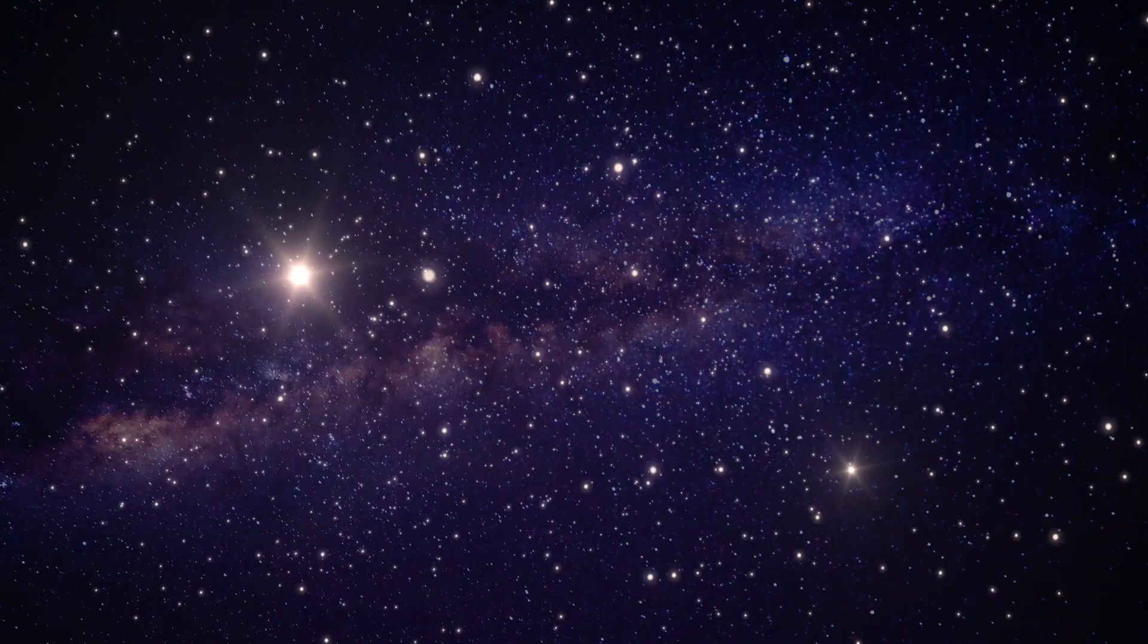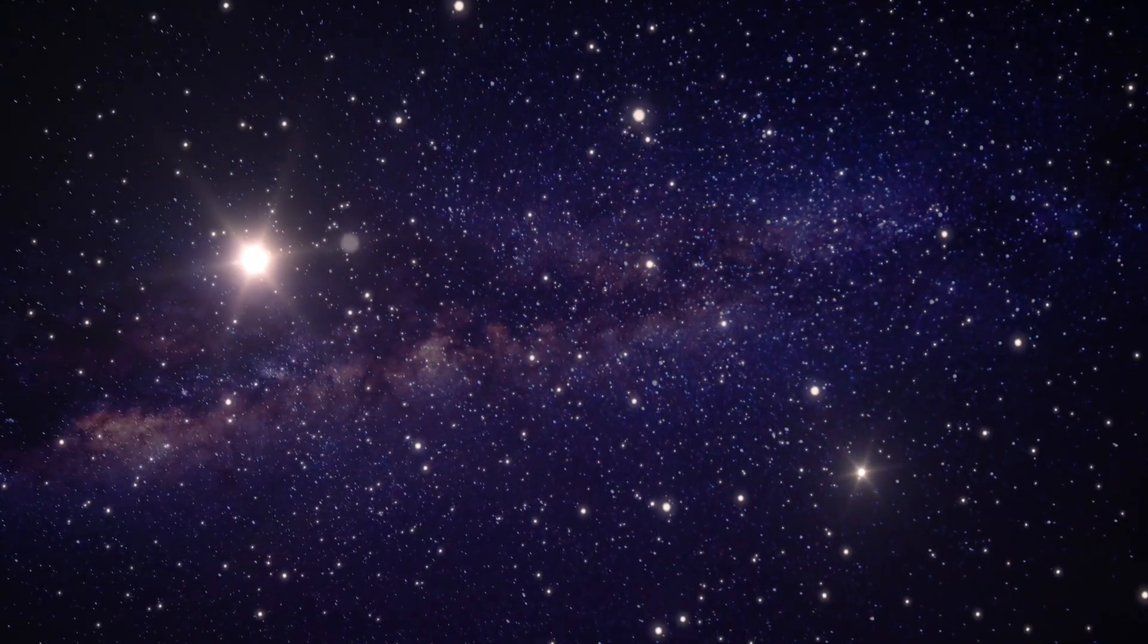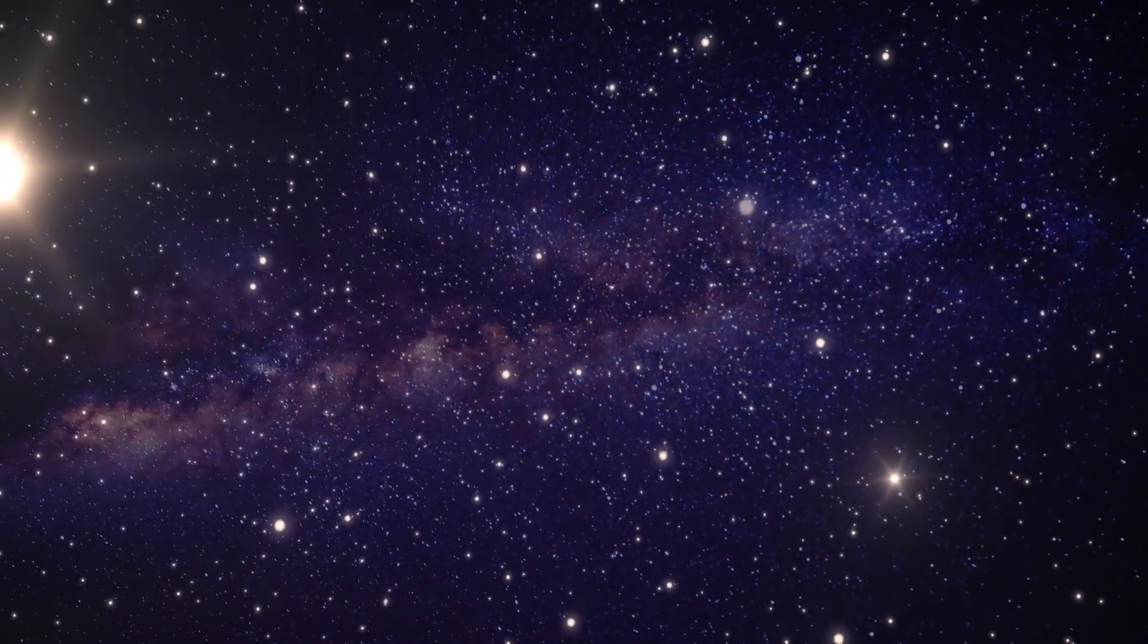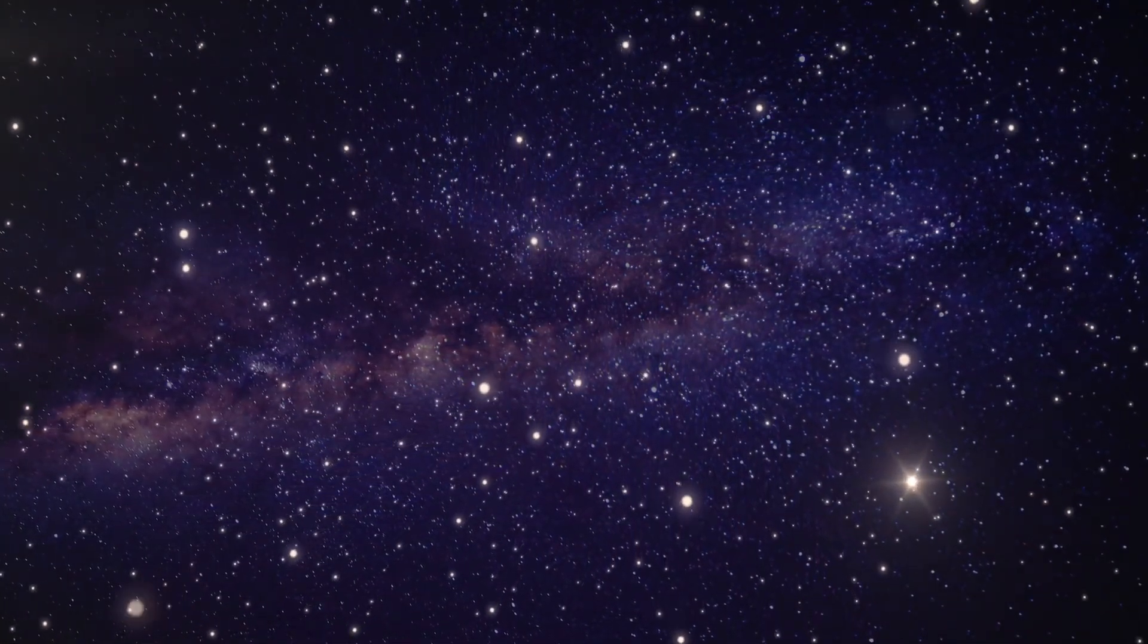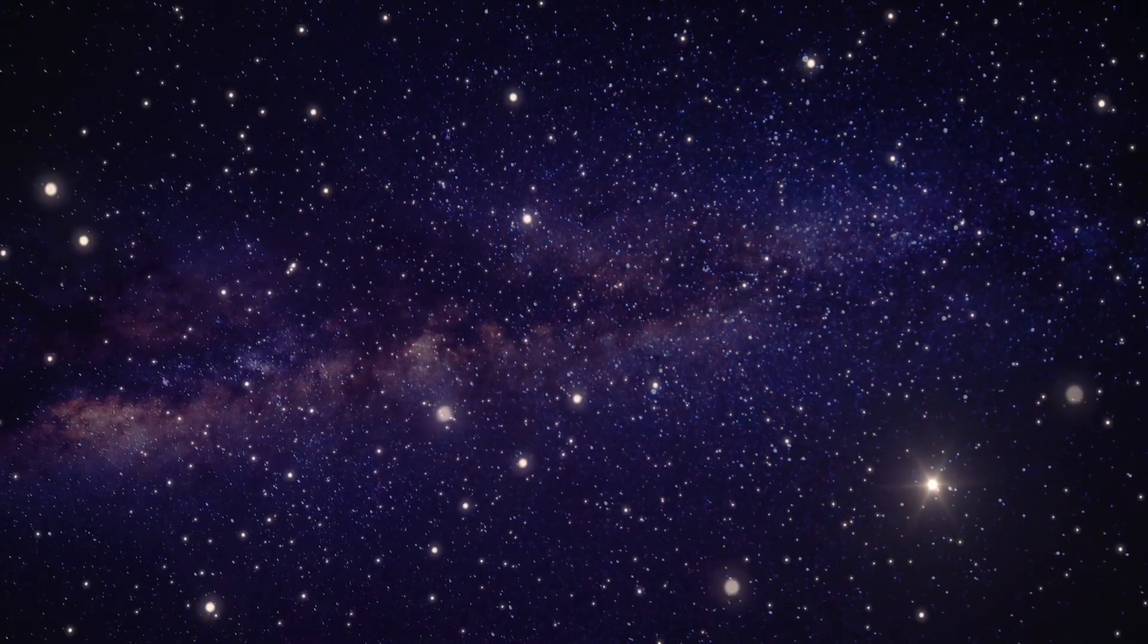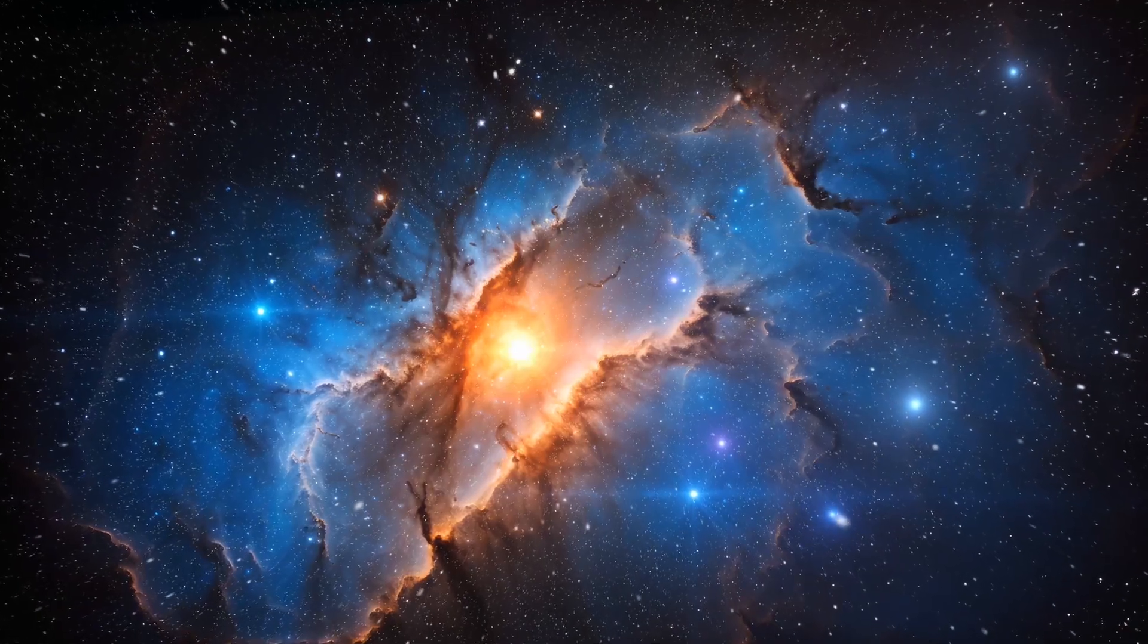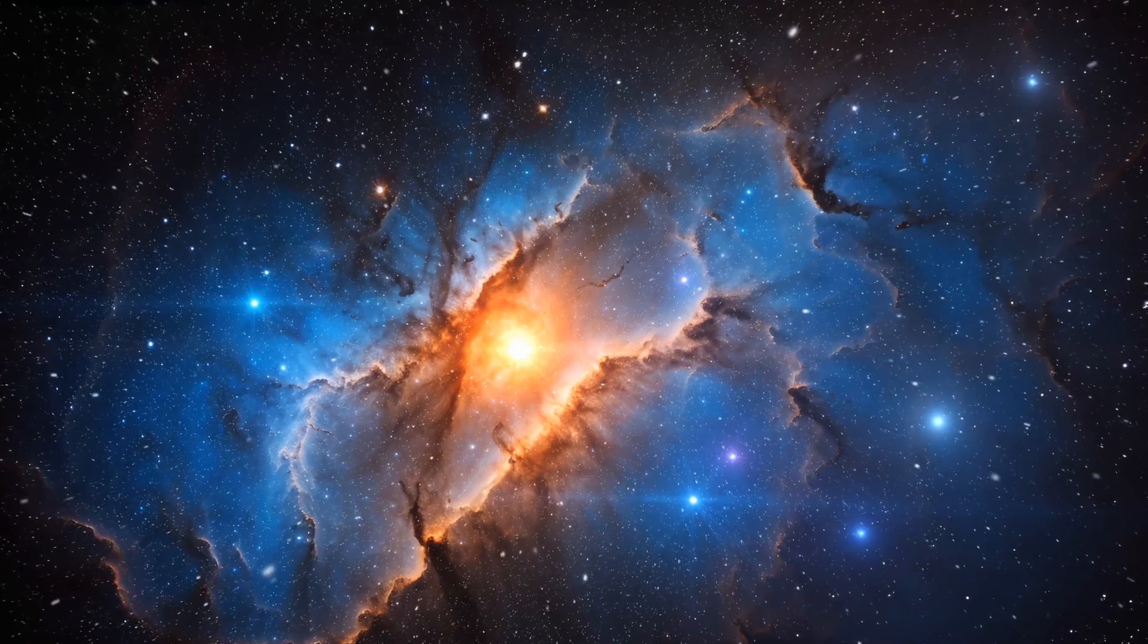Stars are huge balls of gas that produce light and heat. They are scattered throughout the universe and can be found in galaxies like our own Milky Way. Stars come in different sizes, colors, and temperatures. They are formed in giant clouds of gas and dust called nebulae.